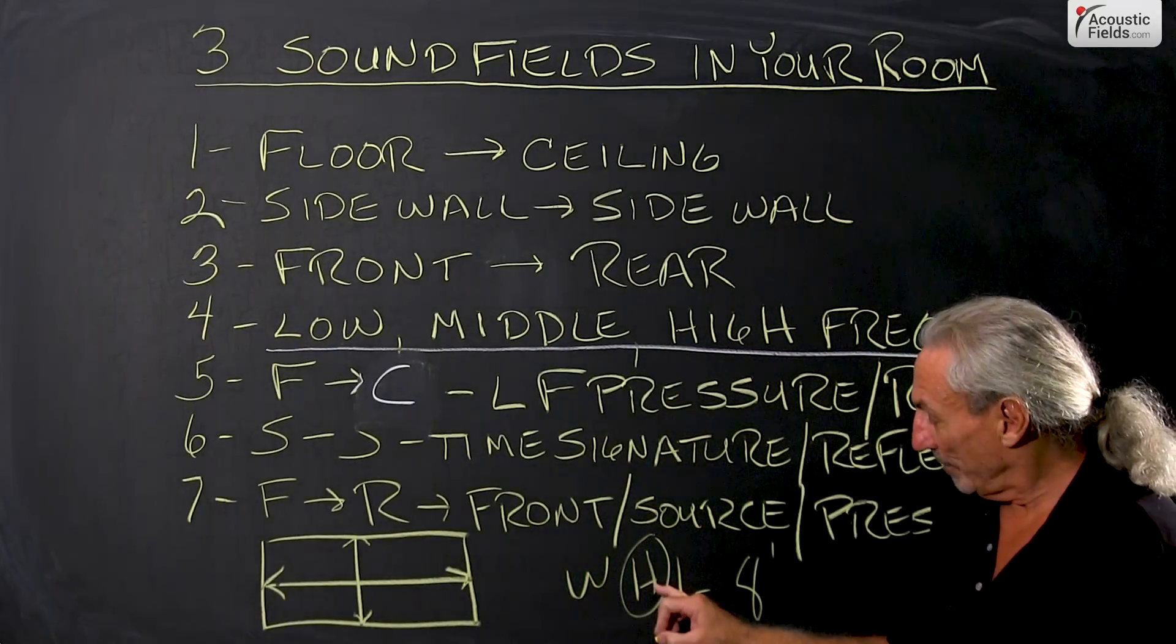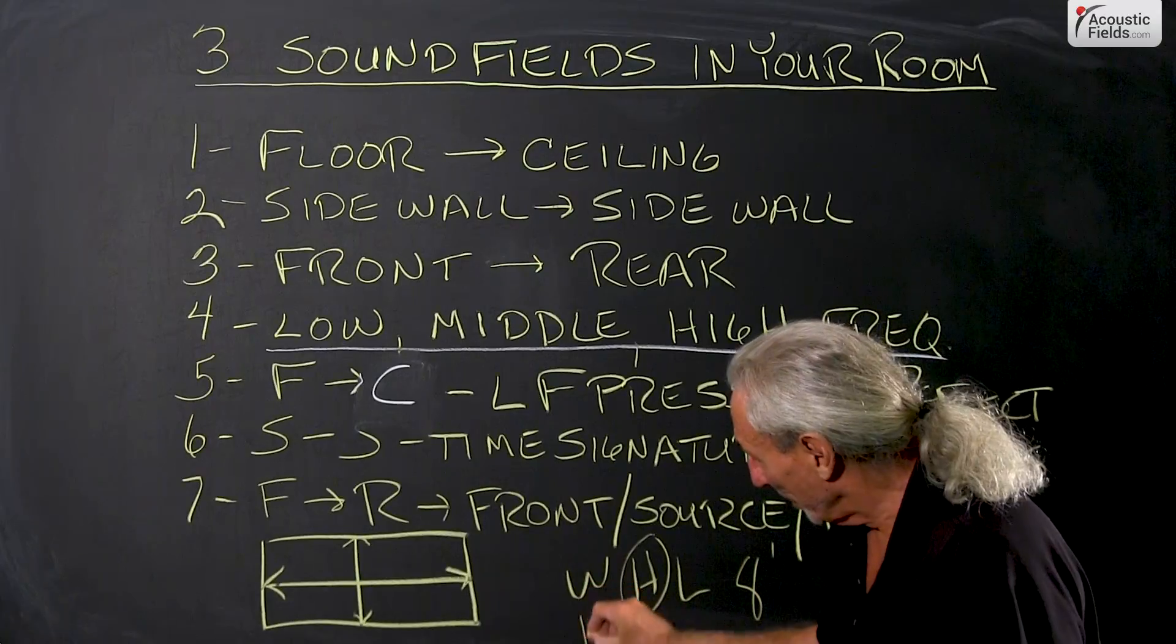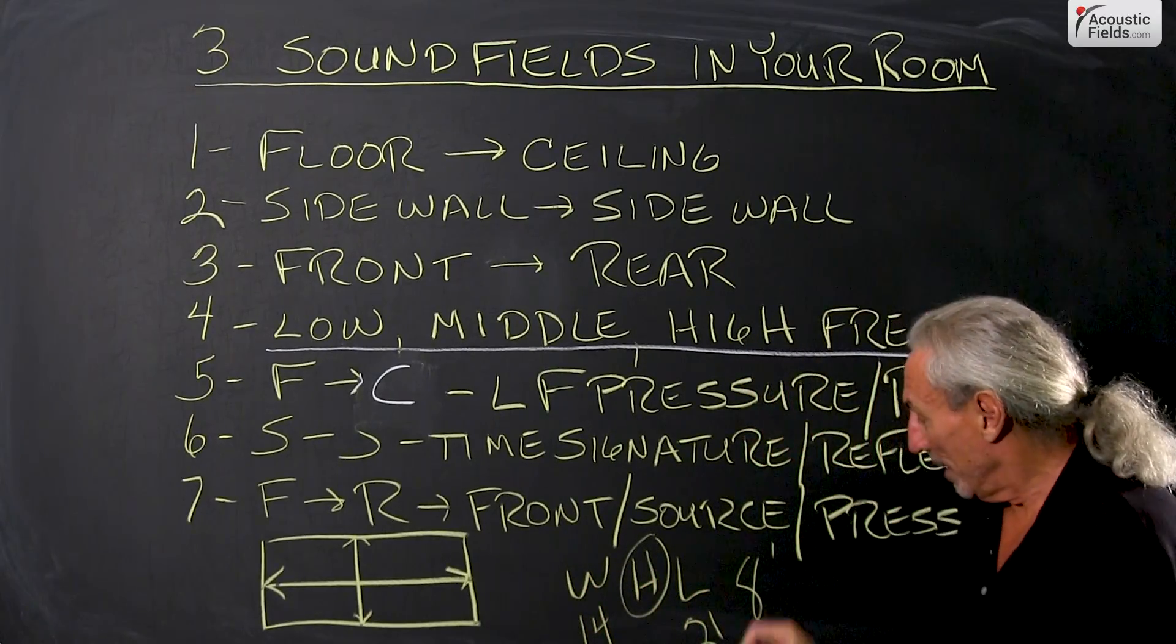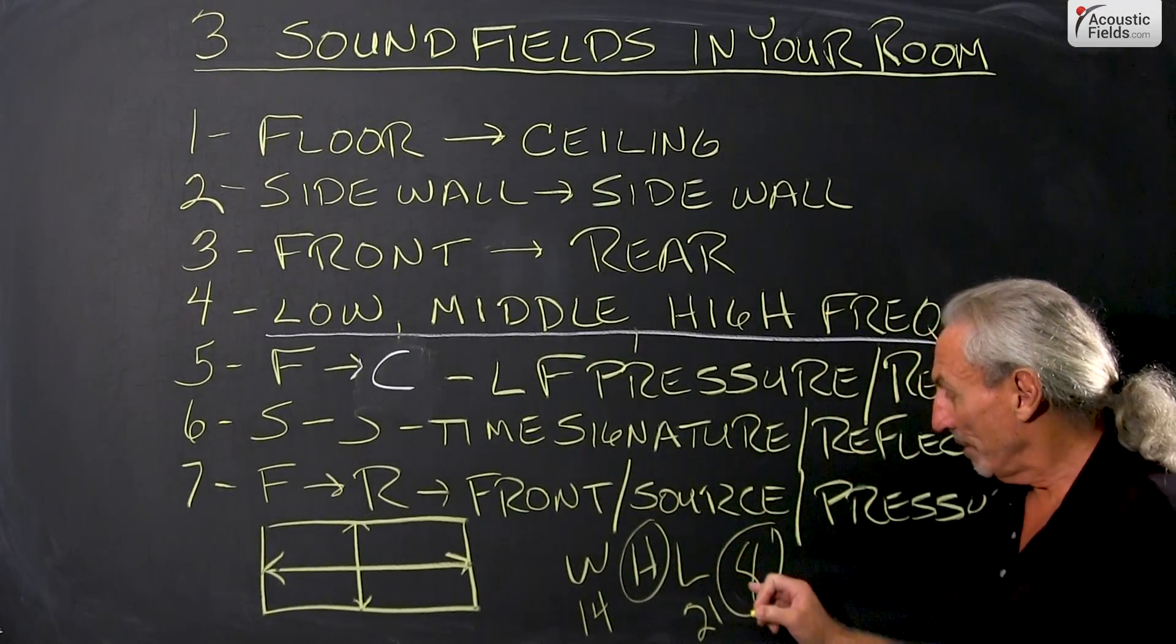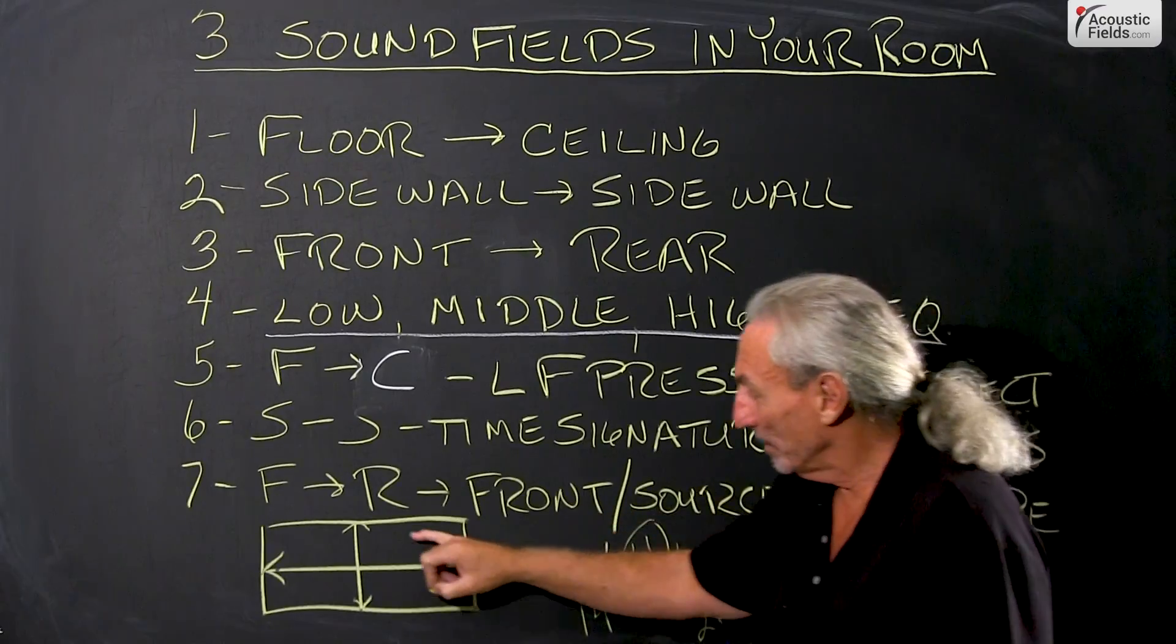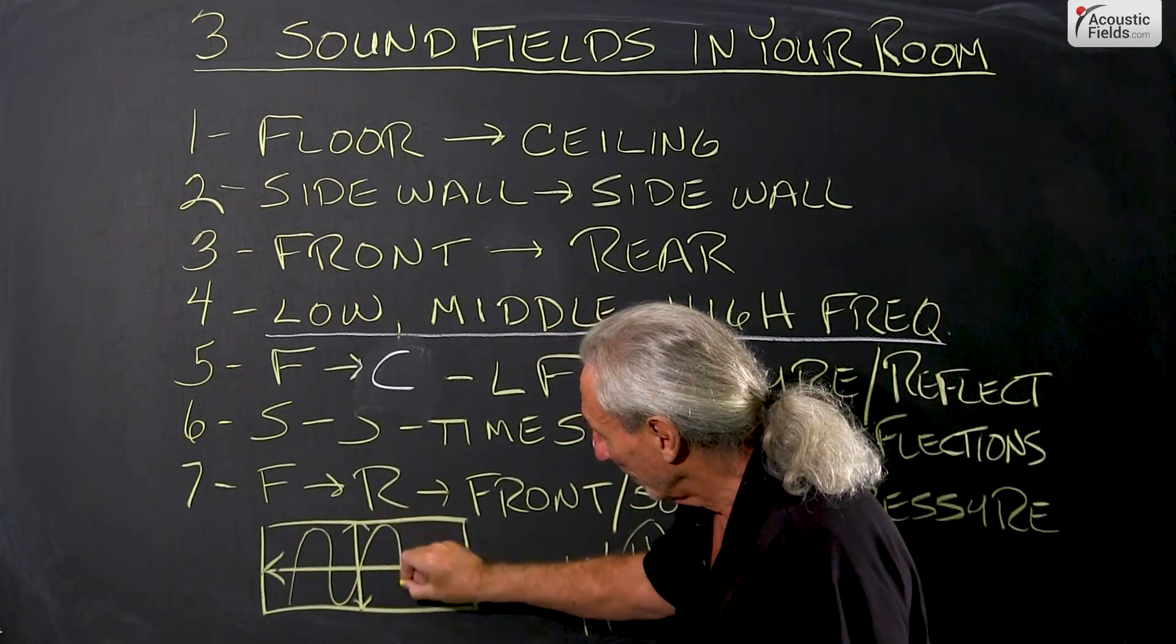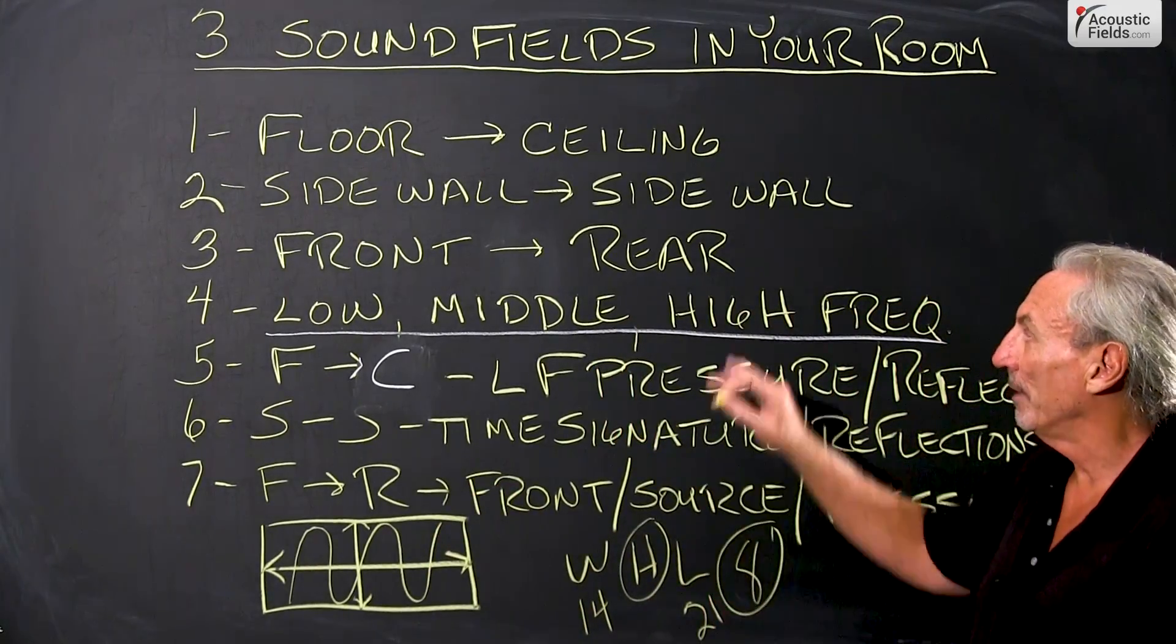So if it's going to be the shortest of the two dimensions, let's say our width is 14 and our length is 21, our eight foot ceiling height is always going to be the shortest. So it's going to have a lot of low frequency pressure issues from floor to ceiling. That is an issue we have to be concerned about.